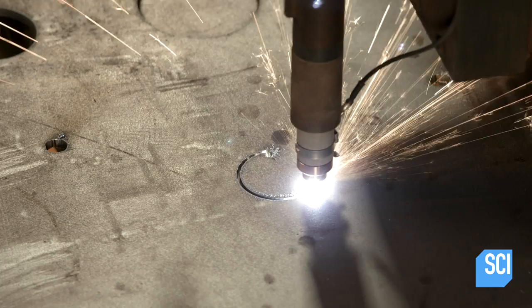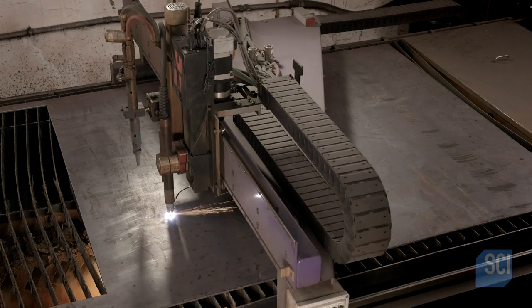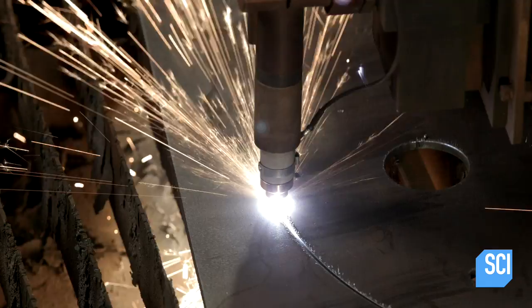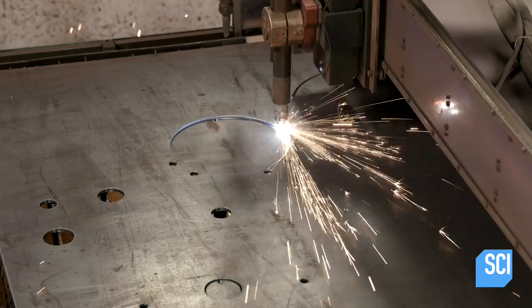To make the drum crusher, a computerized plasma cutter carves out many of the parts from thick steel. The machine both cuts out the profile and makes holes for components. This particular part is a locator plate for the drums.